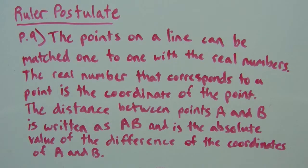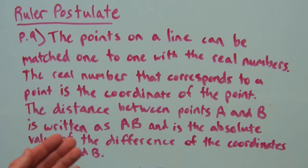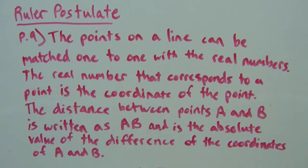We can measure from one point to another point, so we can match the first point, let's call that A, with some number. We usually line it up with zero, but it can be any number. And then we can match point B with another number. So the real number that corresponds to that point is the coordinate of the point, and the distance between points A and B is written as AB.